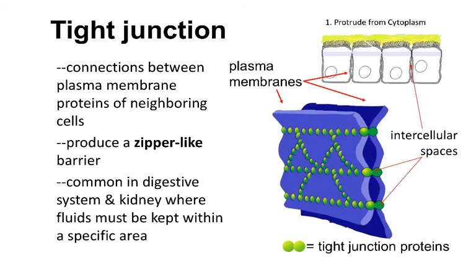Tight junctions are very much like zippers, but they're zippers that don't allow water to pass from one area to another. So these kinds of junctions are really common in the bladder and in the digestive tract — you don't want urine leaking between the cells that make up the inner lining of the bladder, because urine is waste that one needs to dispose of. The plasma membranes are shown in the purple-blue color and the tight junction proteins are shown in bright green. Tight junctions are an awful lot like a quilt where multiple layers of fabric are sewn together — a very similar kind of structure.